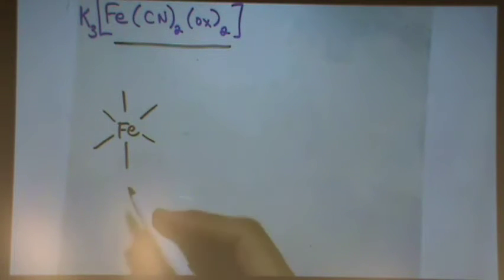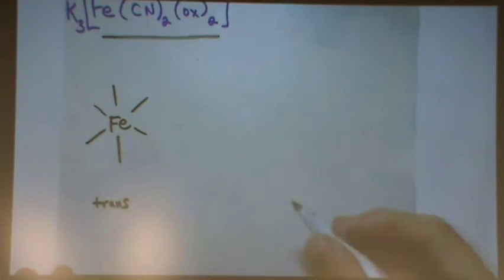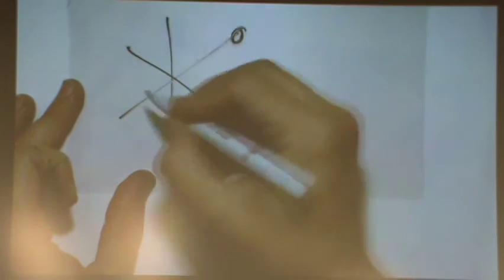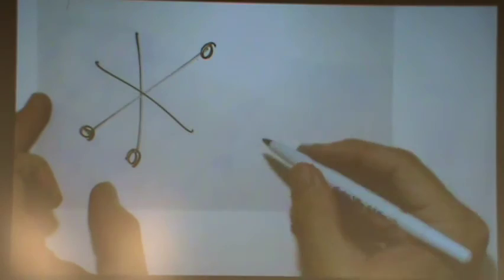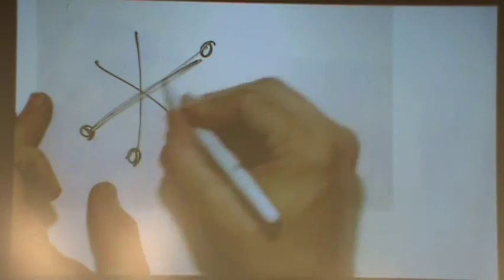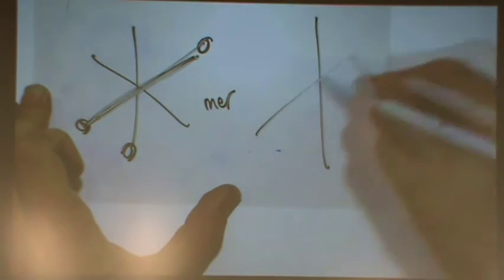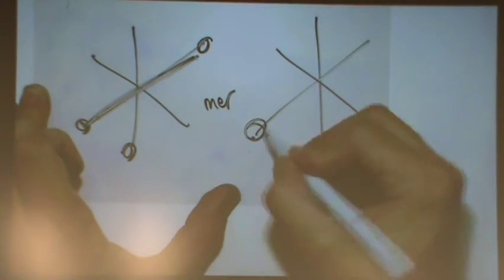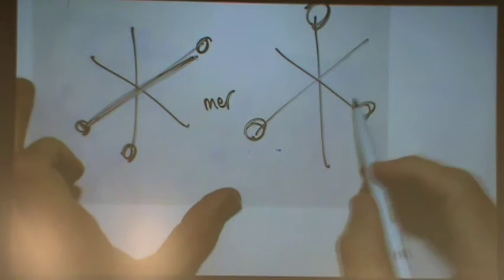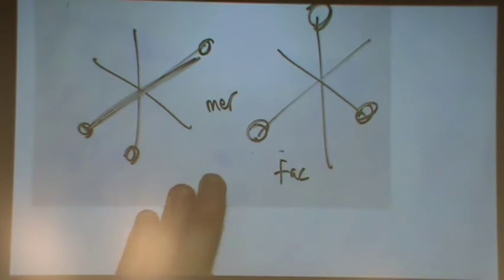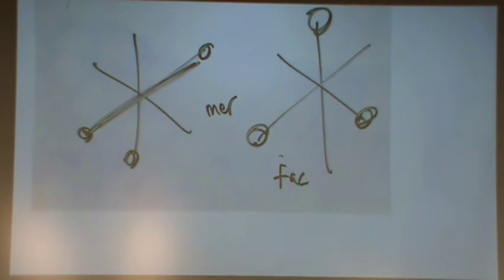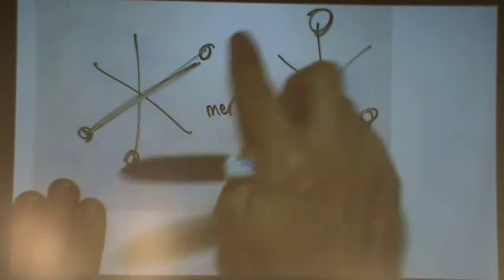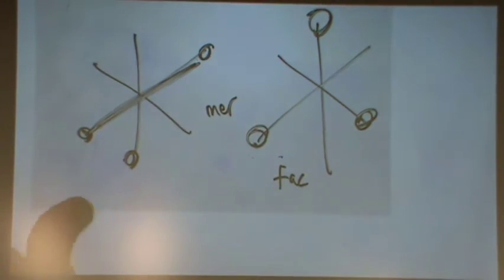Can you remind me what fac or ver? Fac and mer. Ver means two are on the same line. Fac is where no two are on the same line. So all three are different axes for the right-hand side. The mer has one trans kind of look to it.